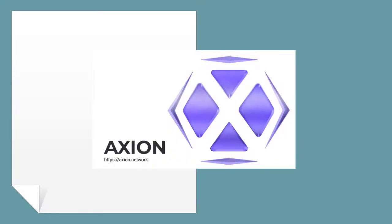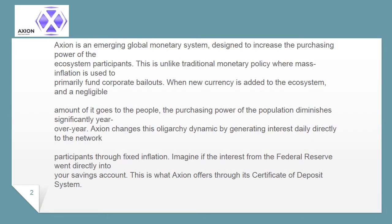Axion - What is Axion? Axion is an emerging global monetary system designed to increase the purchasing power of their ecosystem participants. This is unlike traditional monetary policy where mass inflation is used to primarily fund corporate bailouts. When new currency is added to the ecosystem, only a negligible amount of it goes to the people, and the purchasing power of the population diminishes significantly year over year.